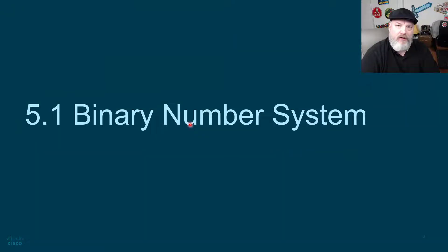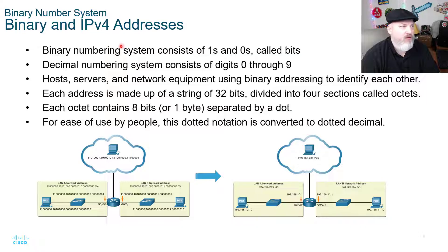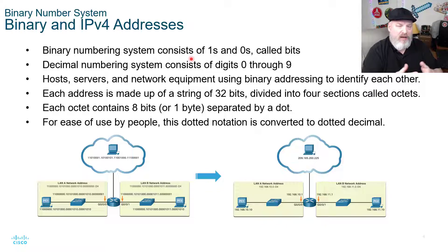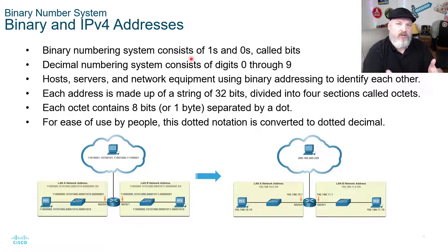The binary number system. Binary and IPv4 addresses. The binary numbering system consists of ones and zeros called bits. Just to back up a bit, we normally use the decimal system in counting. We count from zero to nine.